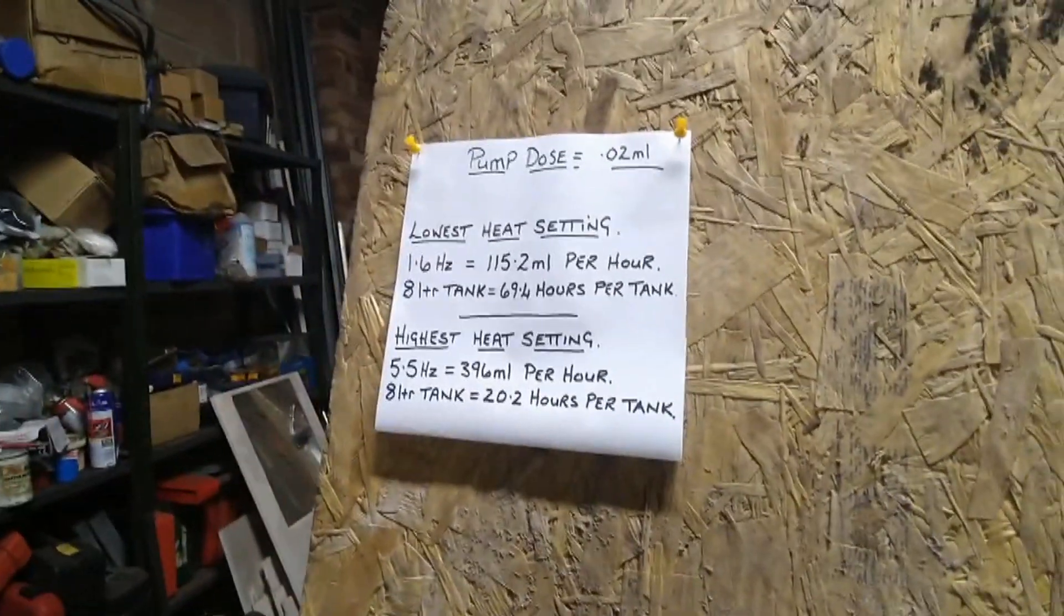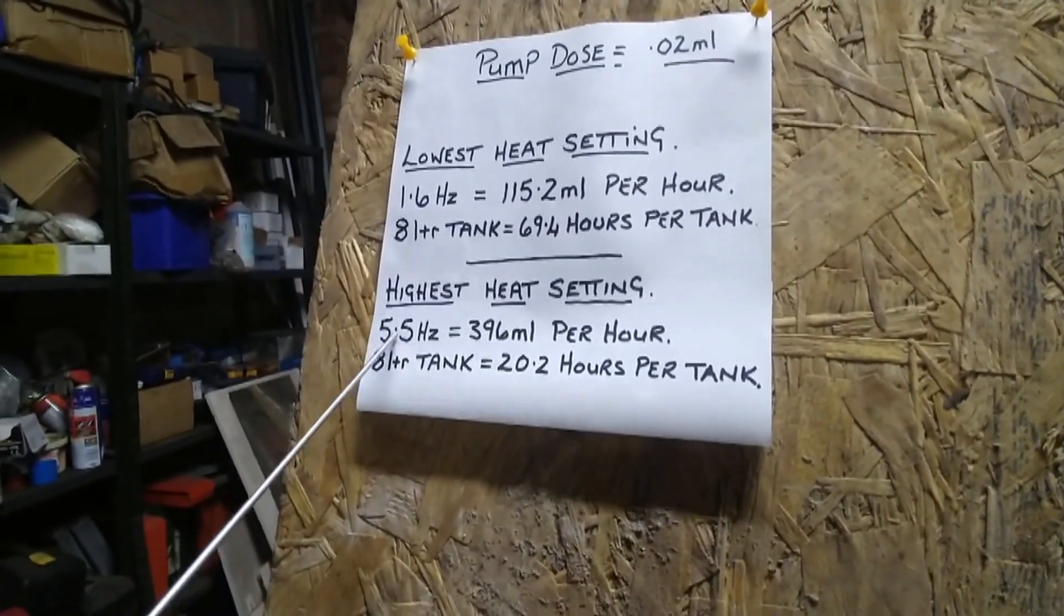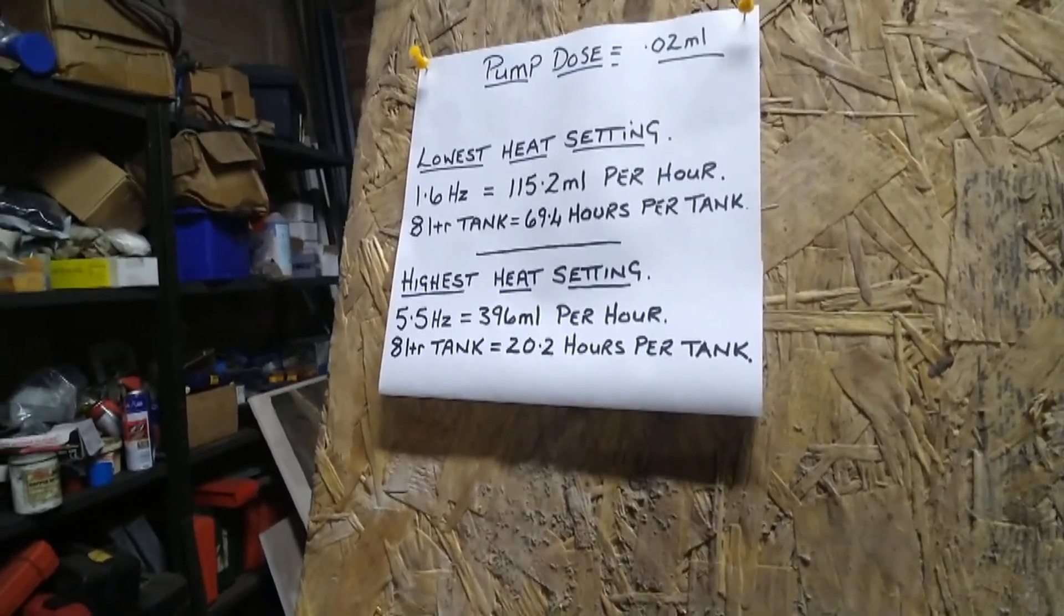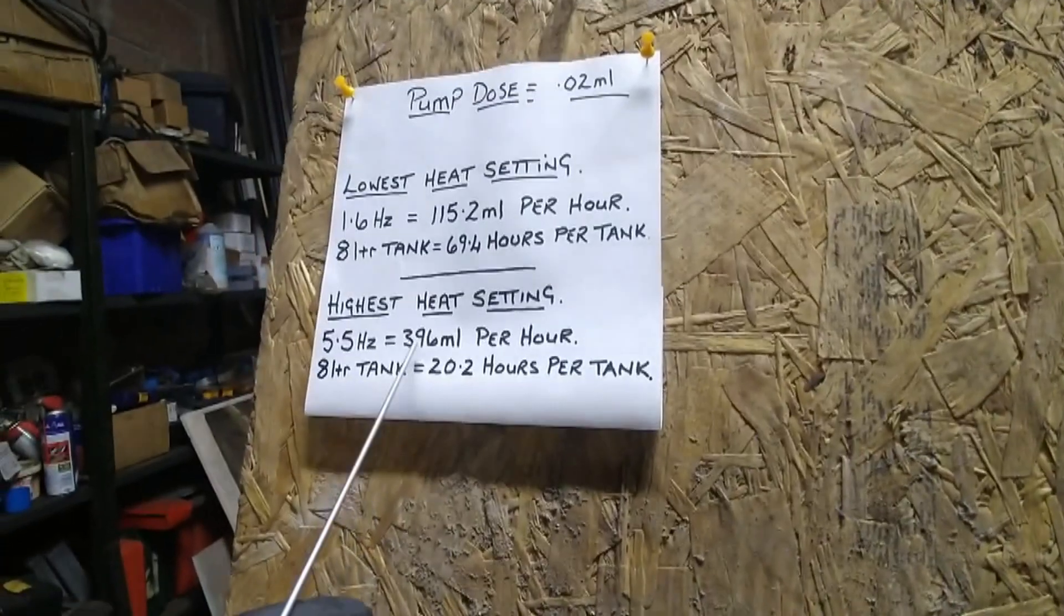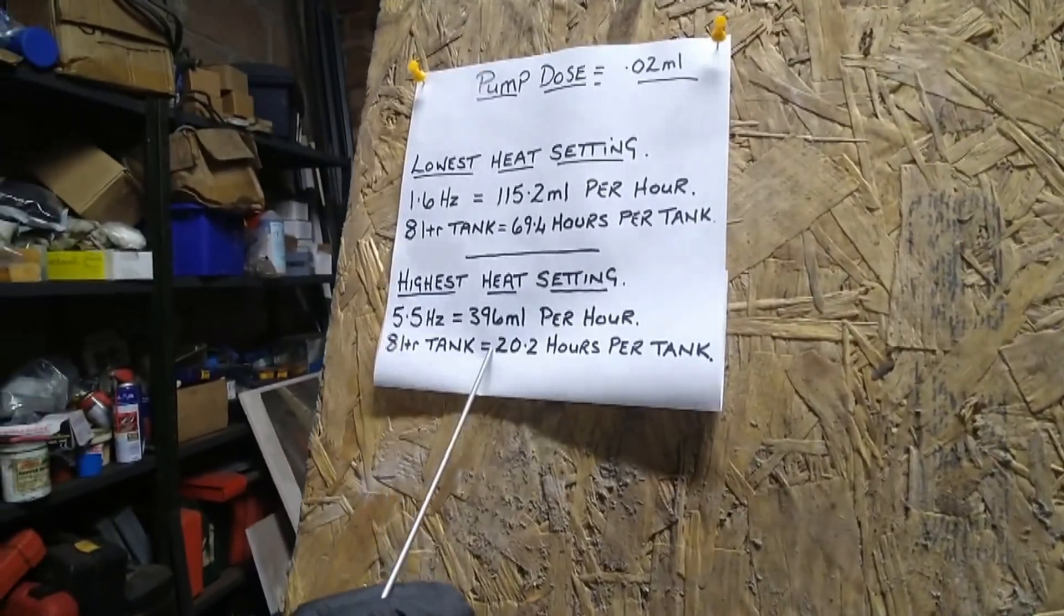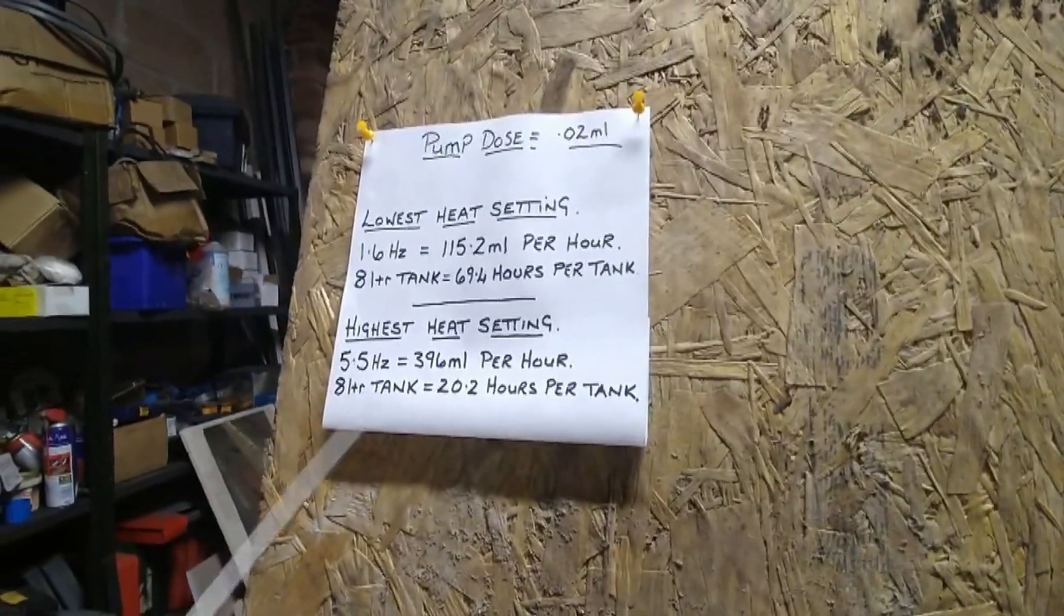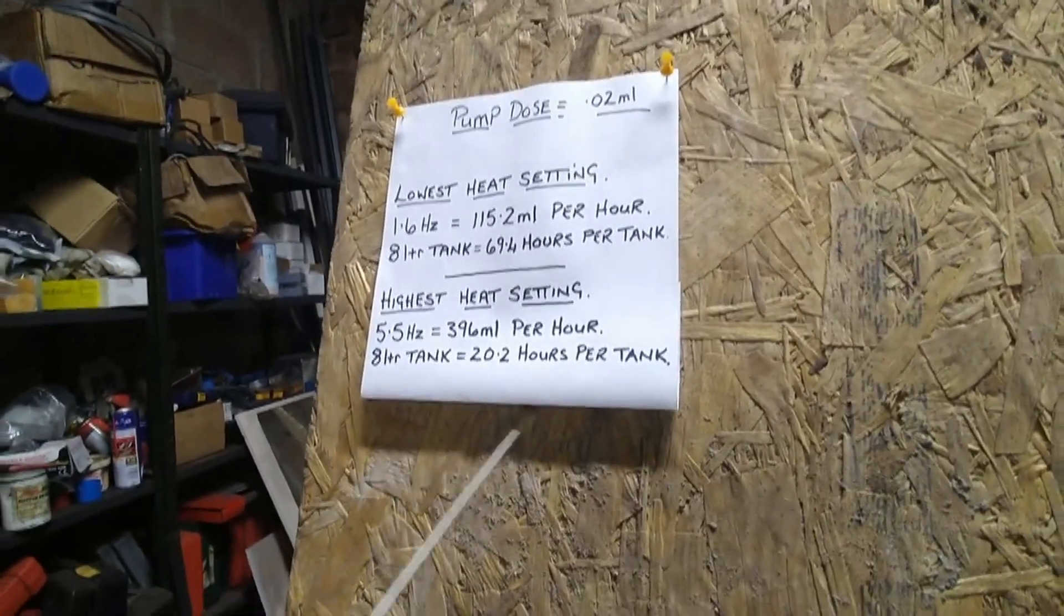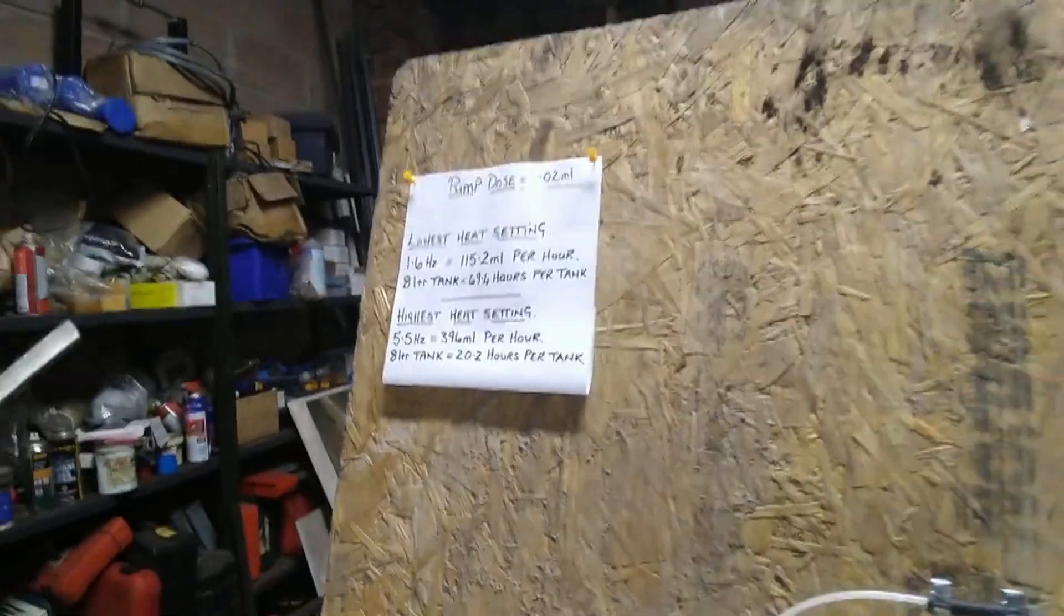What about the highest heat setting? The highest heat setting in Chinese diesel heaters is 5.5 hertz, so the pump is running at 5.5 cycles every second. On the dose rate that would equate to 396 millilitres per hour and on an 8 litre tank that equals 20.2 hours per tank. I'll just add right now there is no chance that you're going to be in a camper van running a heater at 5.5 hertz because within five minutes that's going to turn into a sauna.